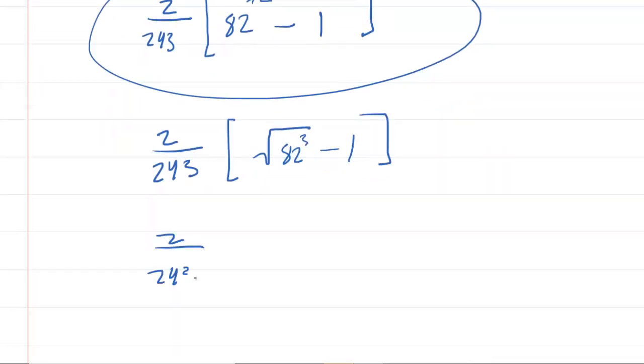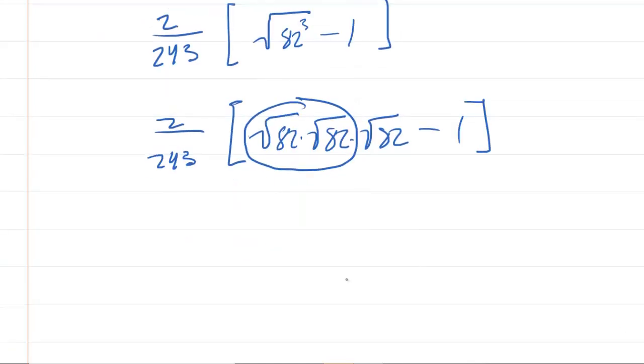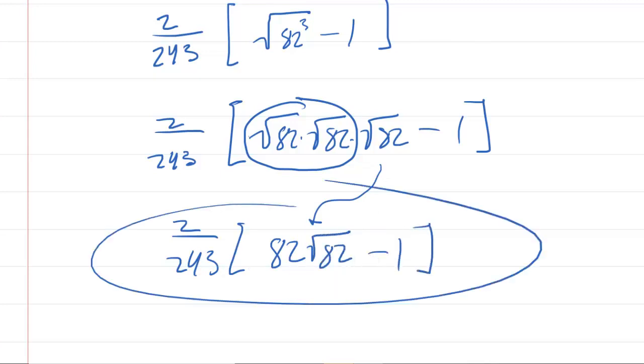Recall that 82 to the three halves is equivalent to the square root of 82 raised to the power of three. This can be written as the square root of 82 times the square root of 82 times the square root of 82. The square root of 82 times the square root of 82 is just 82. So you could also write this as 82 times the square root of 82 minus 1. This would be an equivalent way of expressing the answer.